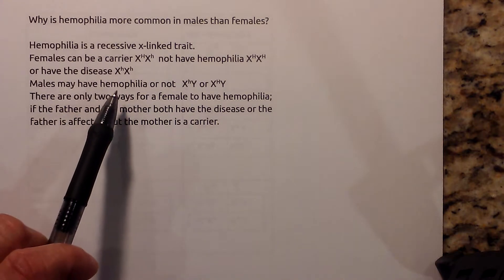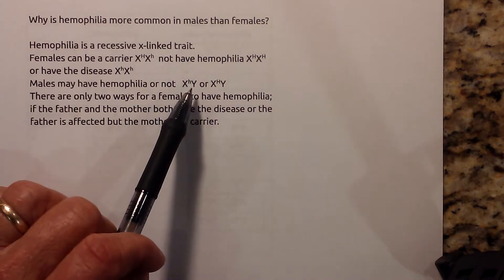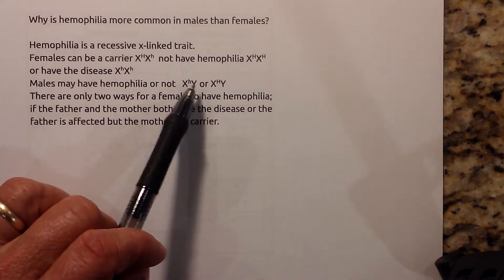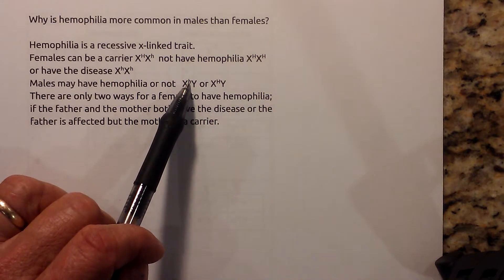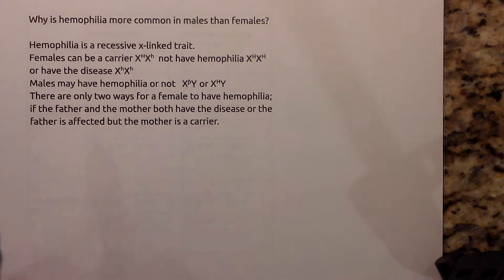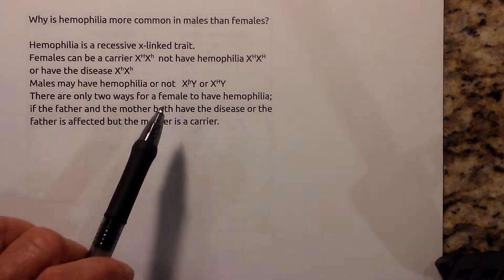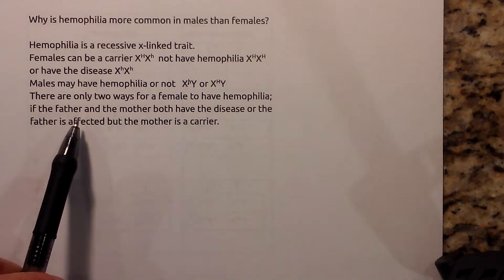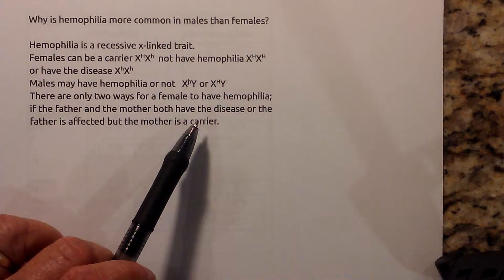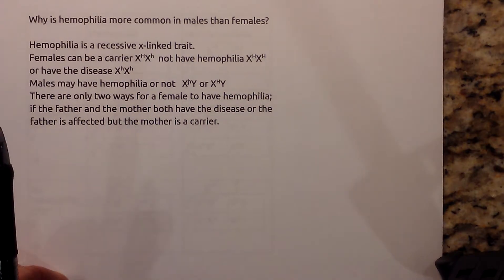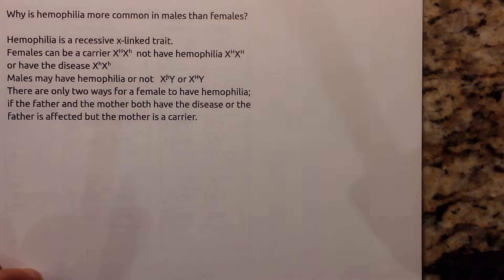Males may have hemophilia or not. Since the Y chromosome doesn't really come into play with an X-linked trait, it either has the lowercase — meaning they have hemophilia — or the capital letter. There are only two ways for a female to have hemophilia: if the father and the mother both have the disease, or if the father is affected and the mother is a carrier. Let's look at a couple of Punnett squares and see why this is the case.